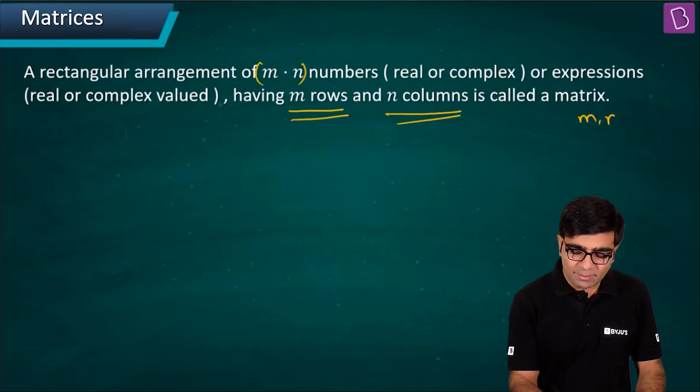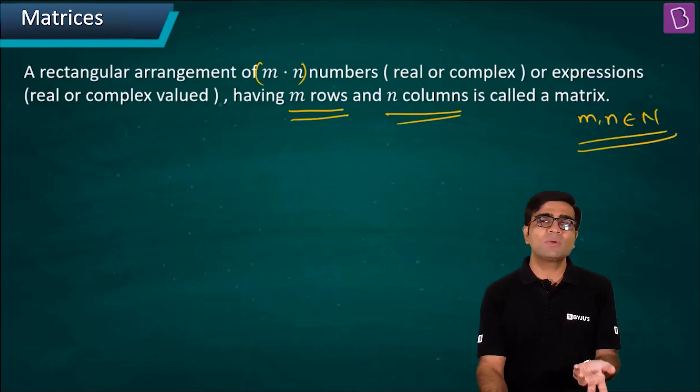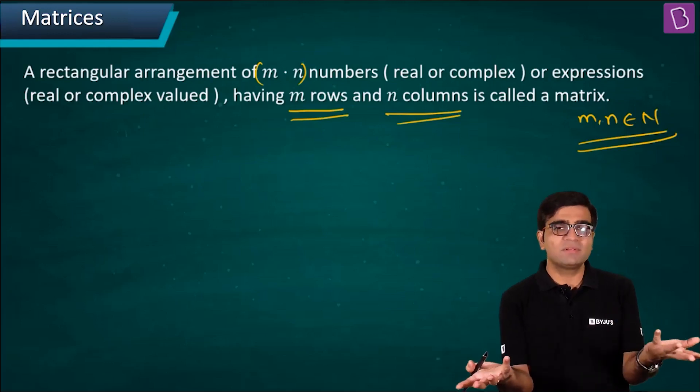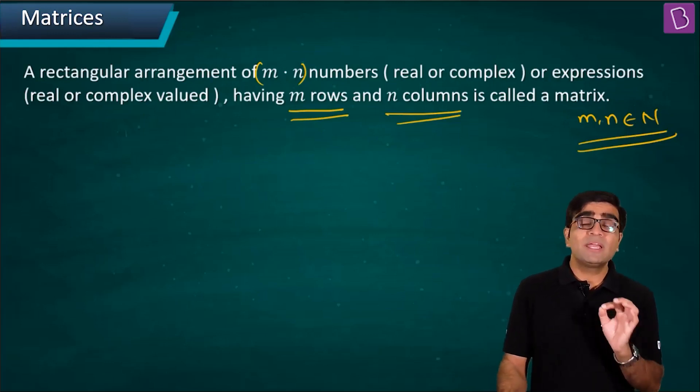Particularly, m and n both belong to natural numbers. I can have either one row or two rows. I cannot have 1.357 rows for obvious reasons. Both m and n have to be natural numbers.